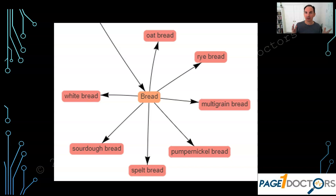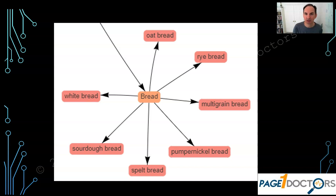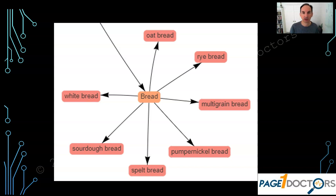Bread is a very generic entity. There are different types of bread: oat bread, rye bread, multigrain, pumpernickel, spelt, sourdough, white. You can Google the different types of bread — there are dozens, hundreds of different types out there. So if you had a website about ham sandwiches, you could have ham sandwich recipes with oat bread, rye bread, multigrain. The list goes on and on.